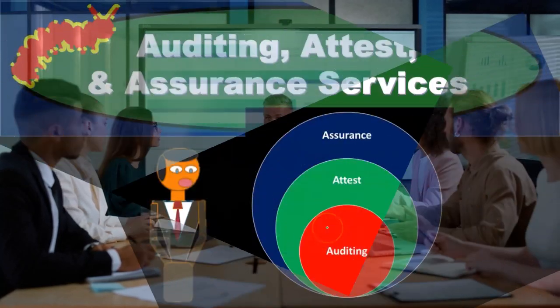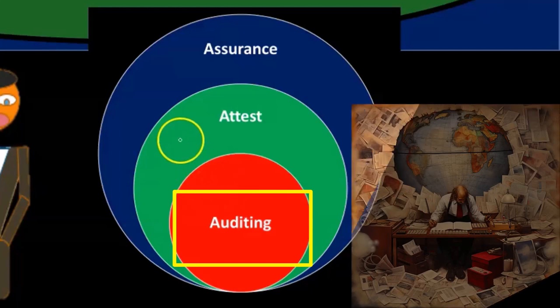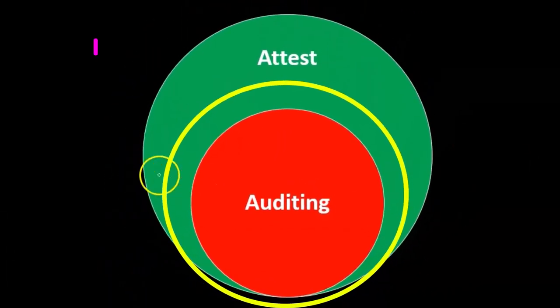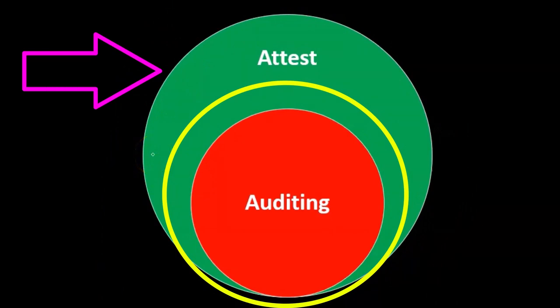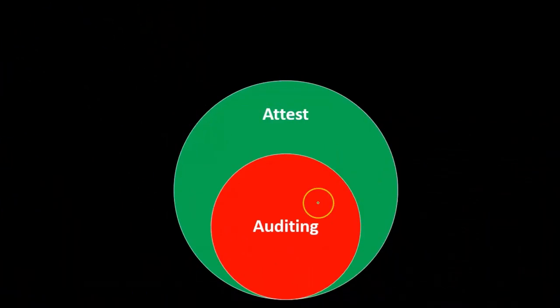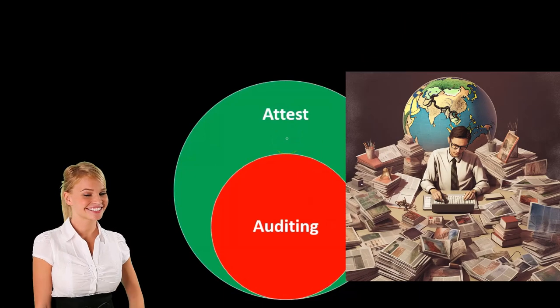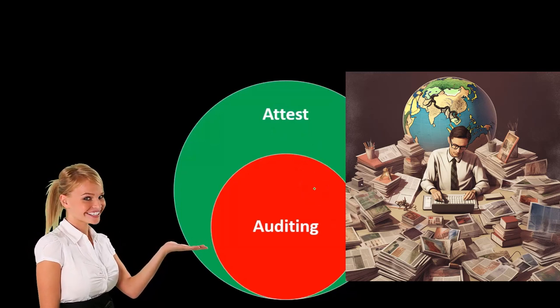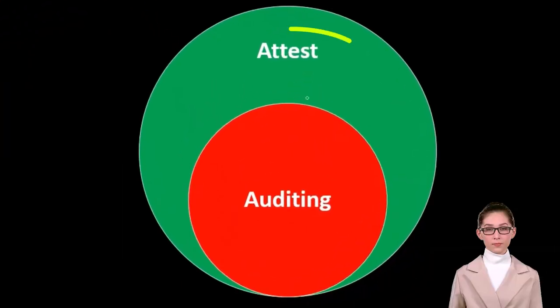We can think about it this way: the audit is the most specific of these terms, fitting within attest, and attest engagements fitting within assurance. When we're talking about an audit at a public accounting firm, we're talking about a very specific thing. That audit can be referred to as a type of attest engagement, but attest engagements are a larger grouping. All audits are attest engagements, but not all attest engagements are audits.